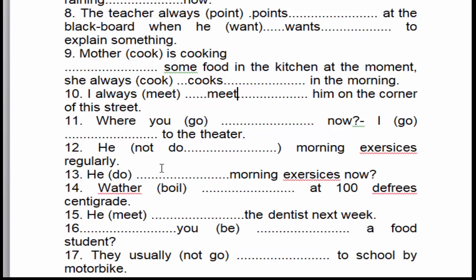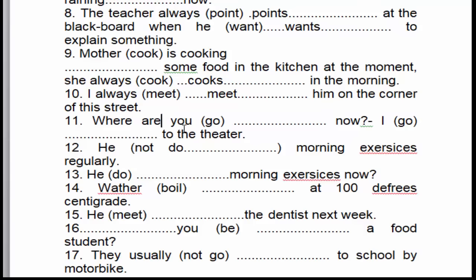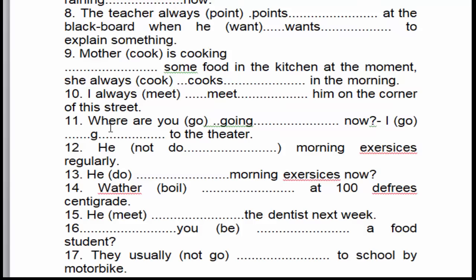Câu số 11: 'Where are you going now?' — 'Now' là dấu hiệu nhận biết của thì hiện tại tiếp diễn. Đây là dạng câu hỏi, cho nên chúng ta chia thì hiện tại tiếp diễn ở dạng câu hỏi: to be đặt đằng trước, rồi chủ ngữ, rồi động từ thêm '-ing' → 'Where are you going?' Câu trả lời: 'I go to the theater.' 'I' là chủ ngữ số nhiều, cho nên 'go' để nguyên mẫu.